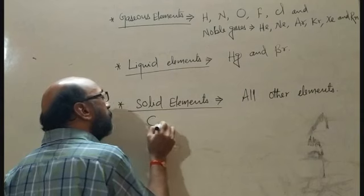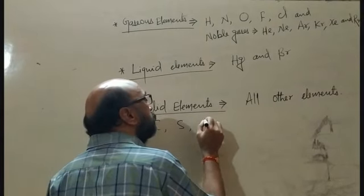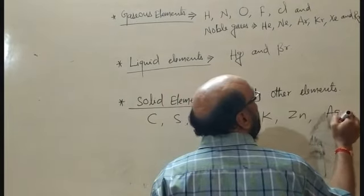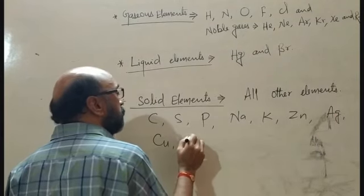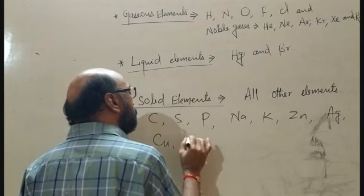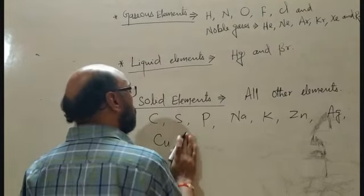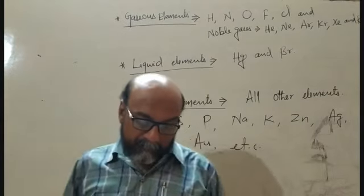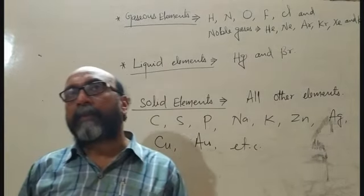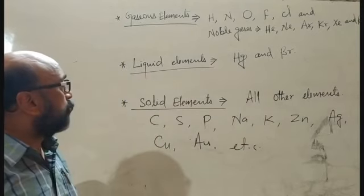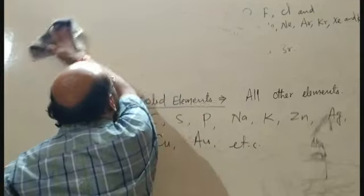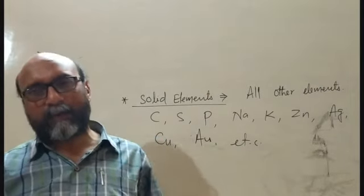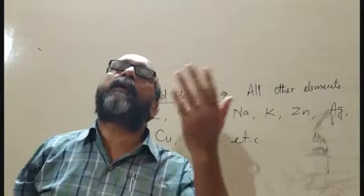Examples of solid elements include carbon, sulfur, phosphorus, sodium, potassium, zinc, silver, copper, gold, etc. Everything in the universe is made up of either one element or more than one different elements.